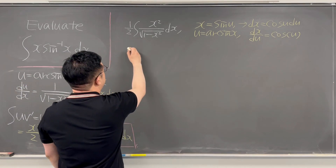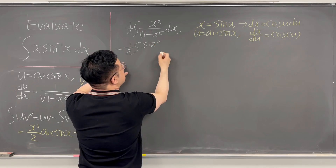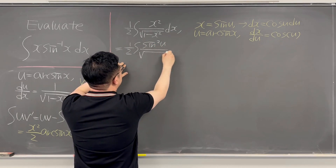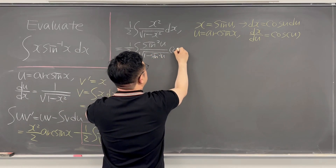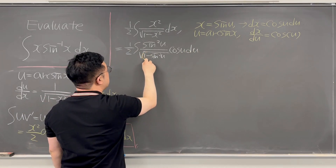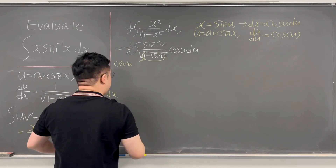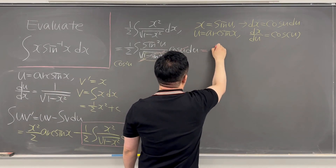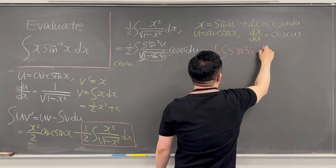Using this substitution, we can rewrite the integral as 1/2 times the integral of sine squared(u) over the square root of 1 minus sine squared(u), times cosine(u) du. Noticing that 1 minus sine squared(u) equals cosine squared(u), we can cancel these terms out. So your integral simplifies to 1/2 times the integral of sine squared(u) du.